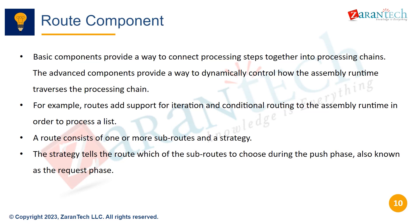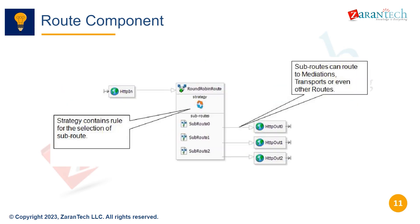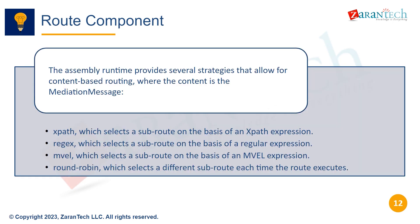Now let's look at the route component. Basic components connect processing steps into processing chains, while advanced components like route provide a way to dynamically control how the assembly runtime traverses the processing chain. For example, routes add support for iteration and conditional routing to process a list. A route consists of one or more sub-routes and a strategy. The strategy tells the route which sub-route to choose during the push phase, also known as the request phase. The assembly runtime provides several strategies for content-based routing, including: SPATH, which selects a sub-route based on an SPATH expression; REGEX, which selects a sub-route based on a regular expression; MVEL, which selects a sub-route based on an MVEL expression; and ROUNDROBIN, which selects a different sub-route each time the route executes.